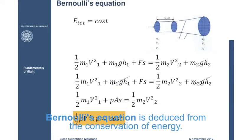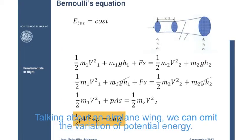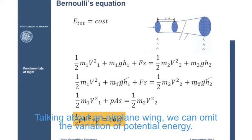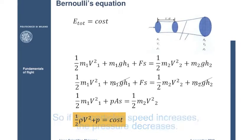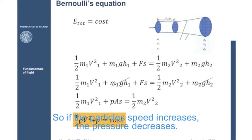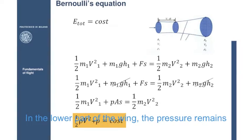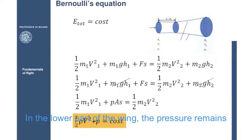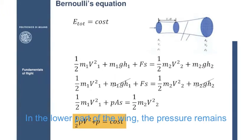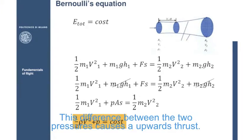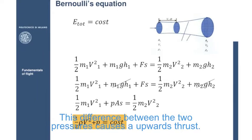Bernoulli's equation is deduced from the conservation of energy. Talking about an airplane wing, we can omit the variation of potential energy. So, if the particle's speed increases, the pressure must decrease. In the lower part of the wing, the pressure remains almost the same, while in the upper part, is much lower. This difference between the two pressures causes an upward thrust.